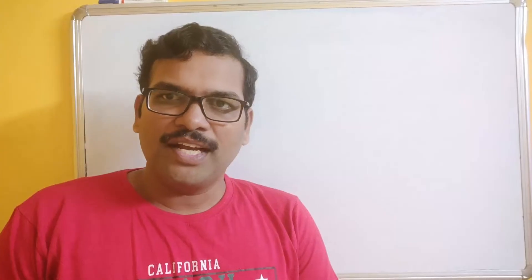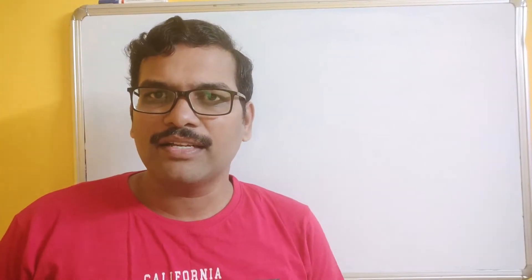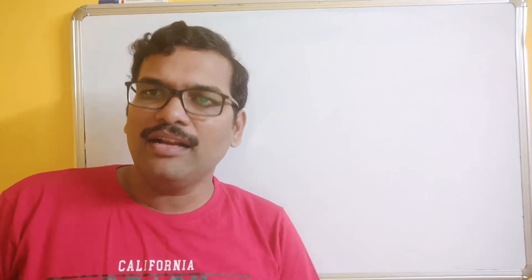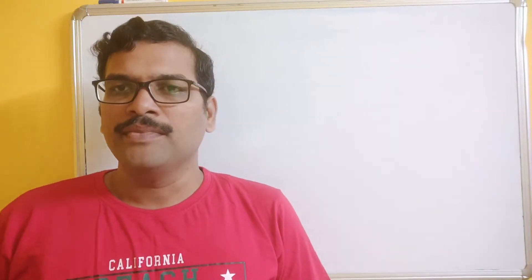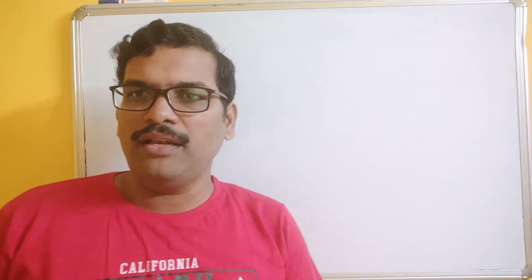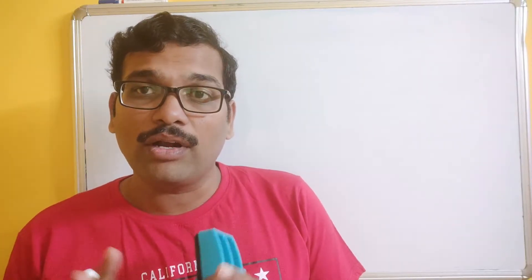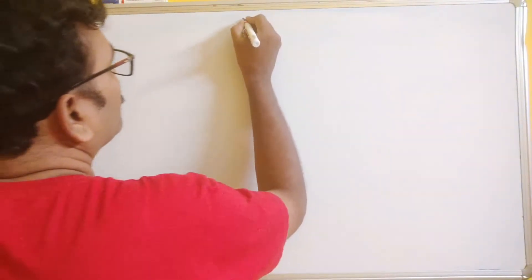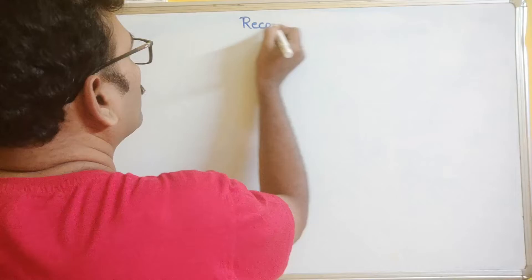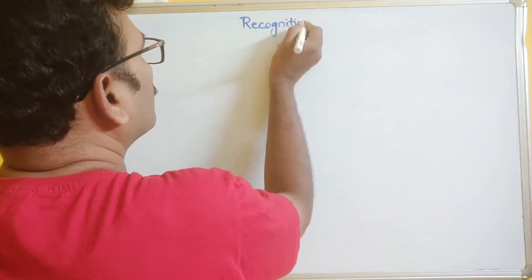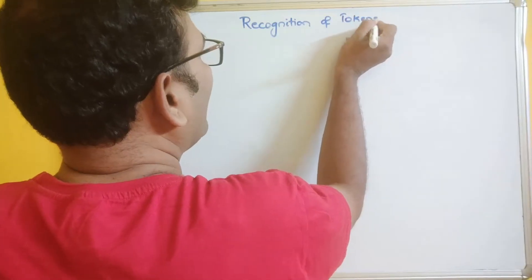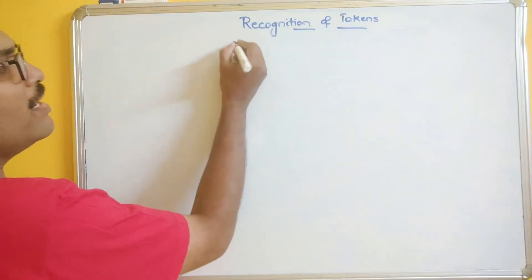Hello friends, welcome back to our channel. Today we will discuss one more concept in compiler design: recognition of tokens. In our previous session we saw how to generate the list of tokens and the different specifications of tokens. Now we will see how tokens can be recognized, and this can be done in two ways.